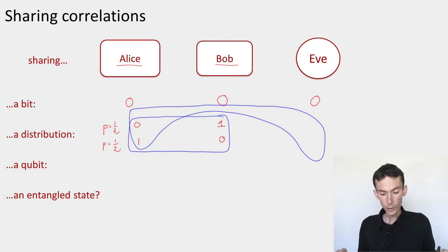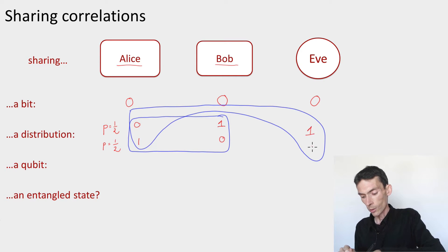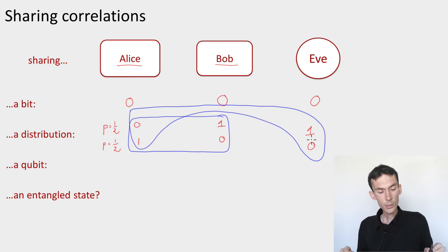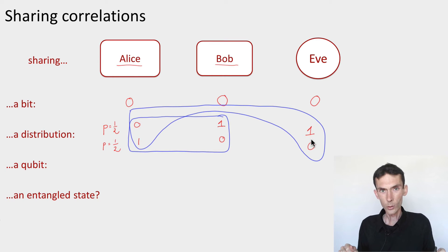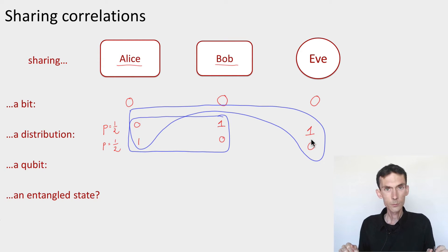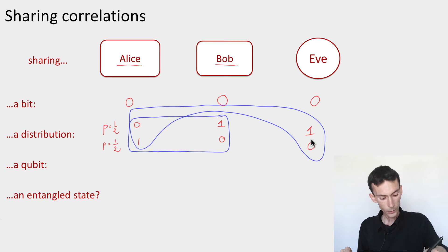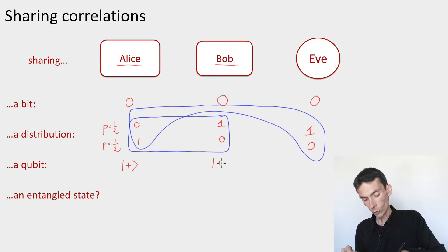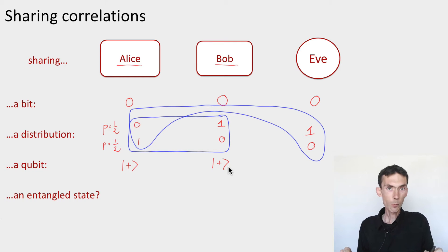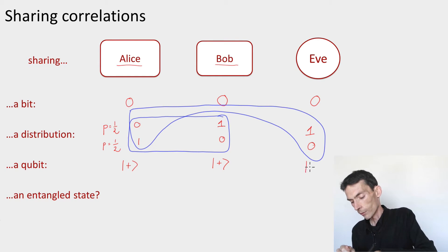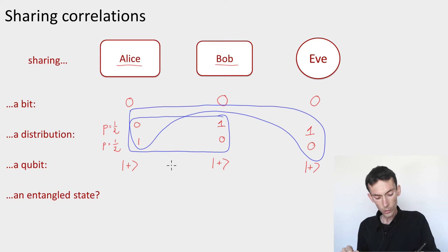In this example, it is possible. I can simply duplicate Bob's bit: with probability one-half, Alice has zero, Bob has one, and Eve also has one; with probability one-half, Alice has one, Bob has zero, and Eve also has zero. So there's no problem sharing a classical distribution — I just copy Bob's bit to Eve. Now let's see if we can share quantum correlations. Let's start with a qubit: if Alice and Bob both have qubits initialized in the plus state, Eve can also have a plus qubit, and there's no problem.